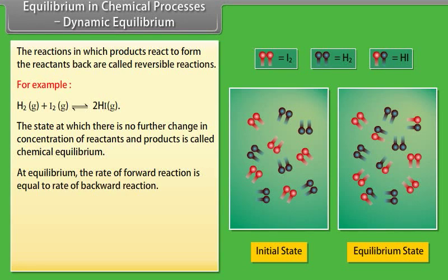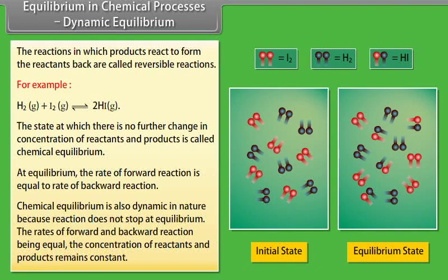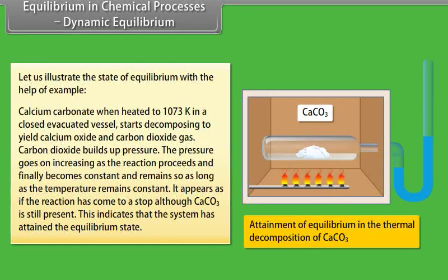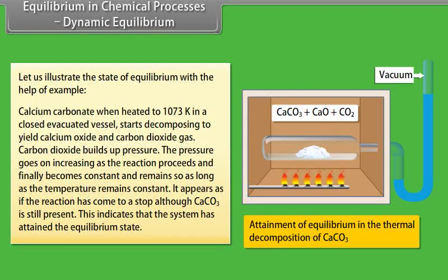At equilibrium, the rate of forward reaction is equal to the rate of backward reaction. Chemical equilibrium is also dynamic in nature because the reaction does not stop at equilibrium — the rates of forward and backward reaction being equal, the concentration of reactants and products remains constant. For example, calcium carbonate when heated to 1073 Kelvin in a closed evacuated vessel decomposes to yield calcium oxide and carbon dioxide gas. The pressure of CO₂ goes on increasing and finally becomes constant as long as temperature remains constant, indicating the system has attained the equilibrium state.